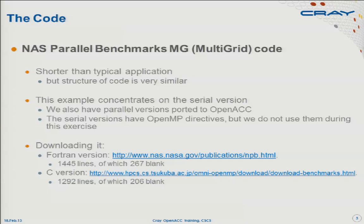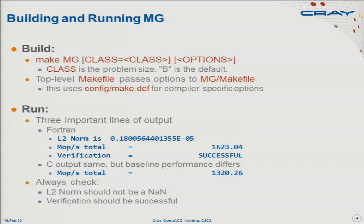The code is bigger than before — we're talking more like a thousand lines rather than 200 lines, and the call tree is a lot more like an actual application. In Practical 3, you get to play with this code. When you build the code, you make it and then run it. You choose the problem size — the default is B, and that's what you use for the practical.